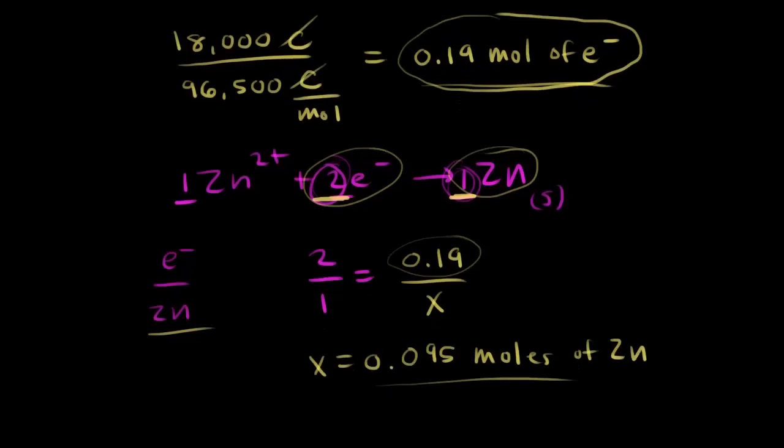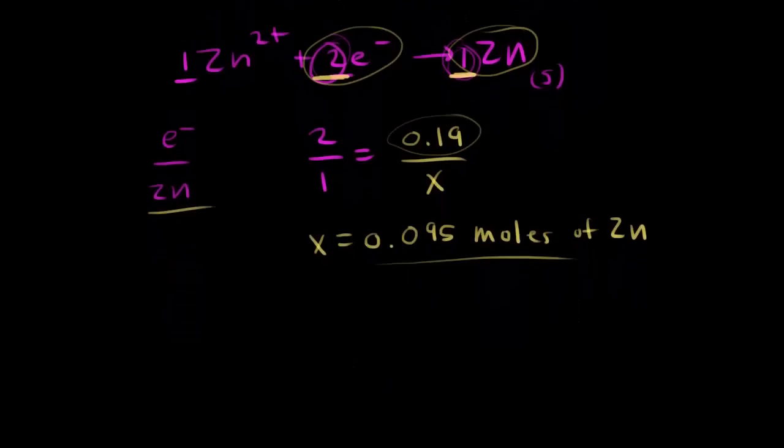Finally, we need to go from moles of zinc to grams of zinc. Our problem asks us for grams of zinc that were deposited. So going from moles to grams is pretty easy. You just multiply by the molar mass.